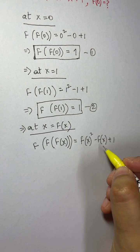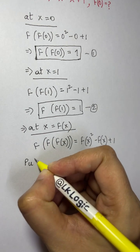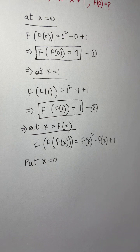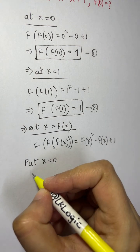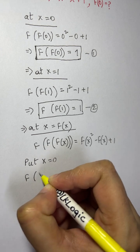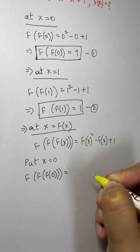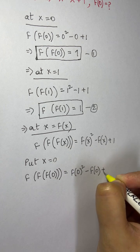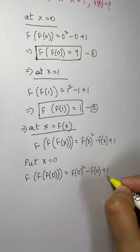Now in this case, putting x = 0, we get f(f(f(f(0)))) = [f(0)]² - f(0) + 1. Let this be Equation 3.